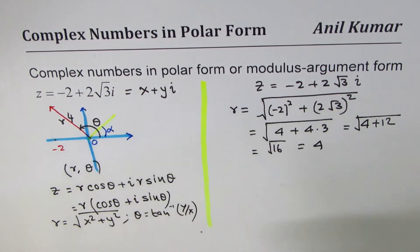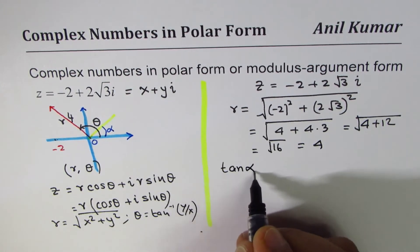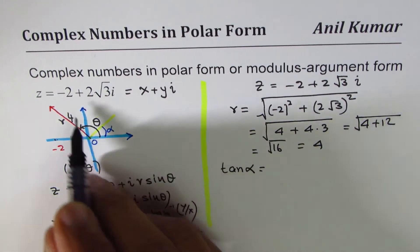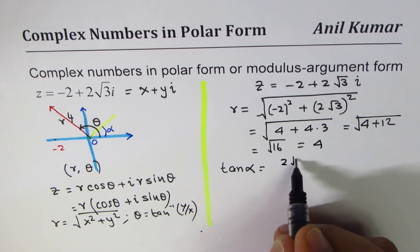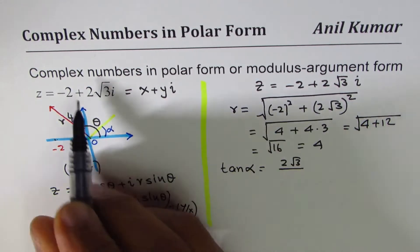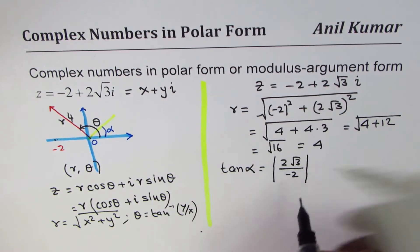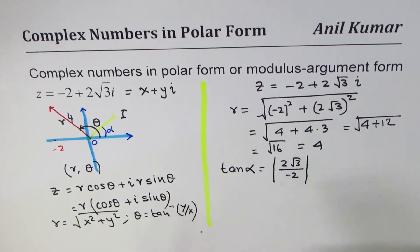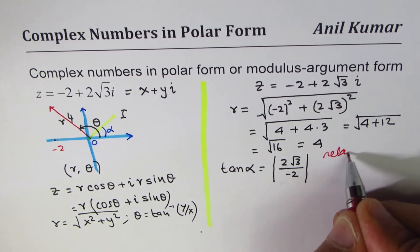Now to find theta, we should actually first find the related acute angle tan alpha. Always take positive values. So that means tan alpha is the sine value, which is 2 square root 3, divided by the cos value, which is minus 2. But you have to take this absolute value. Since we are in quadrant 2, we are finding acute angle. So first step is find the related acute angle.